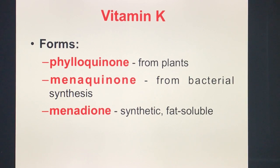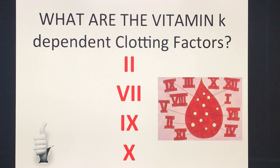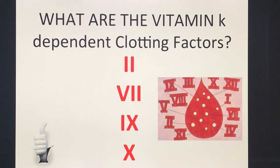Going back to your clerkship and internship in pediatrics, you probably injected Vitamin K in a newborn or preterm baby with suspected hemorrhagic disease of the newborn. The Vitamin K-dependent clotting factors are four: Factor 2, Factor 7, Factor 9, and Factor 10 — memorized as 2-7-9-10, or the famous '1972.' Memorize this for your exam.